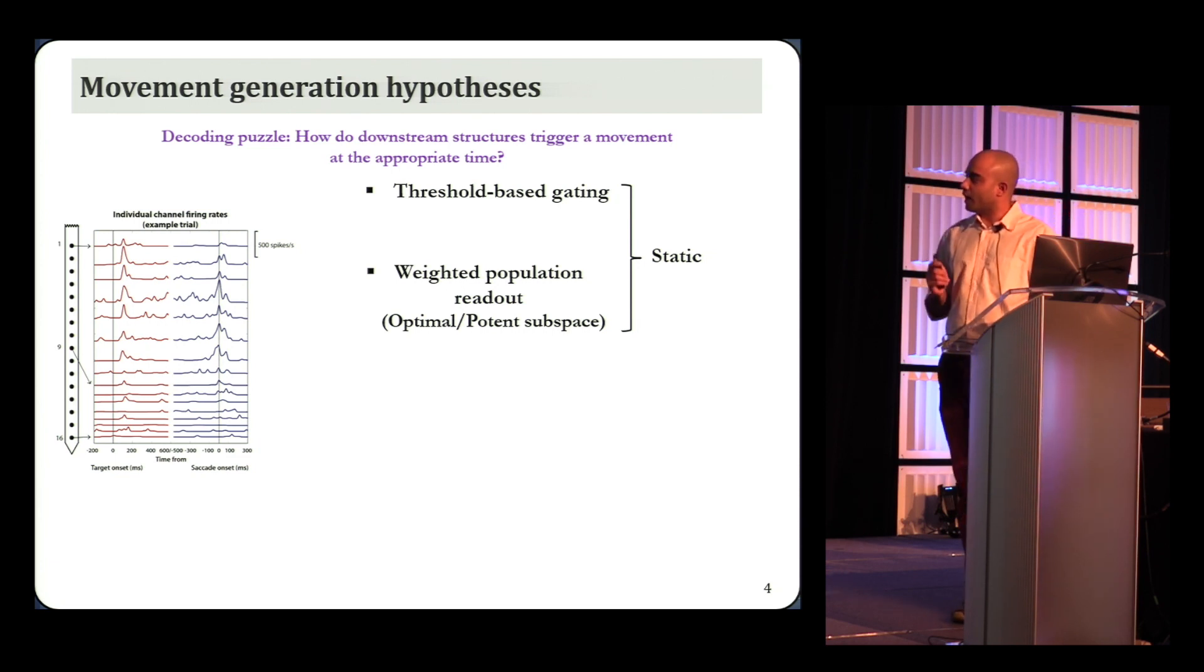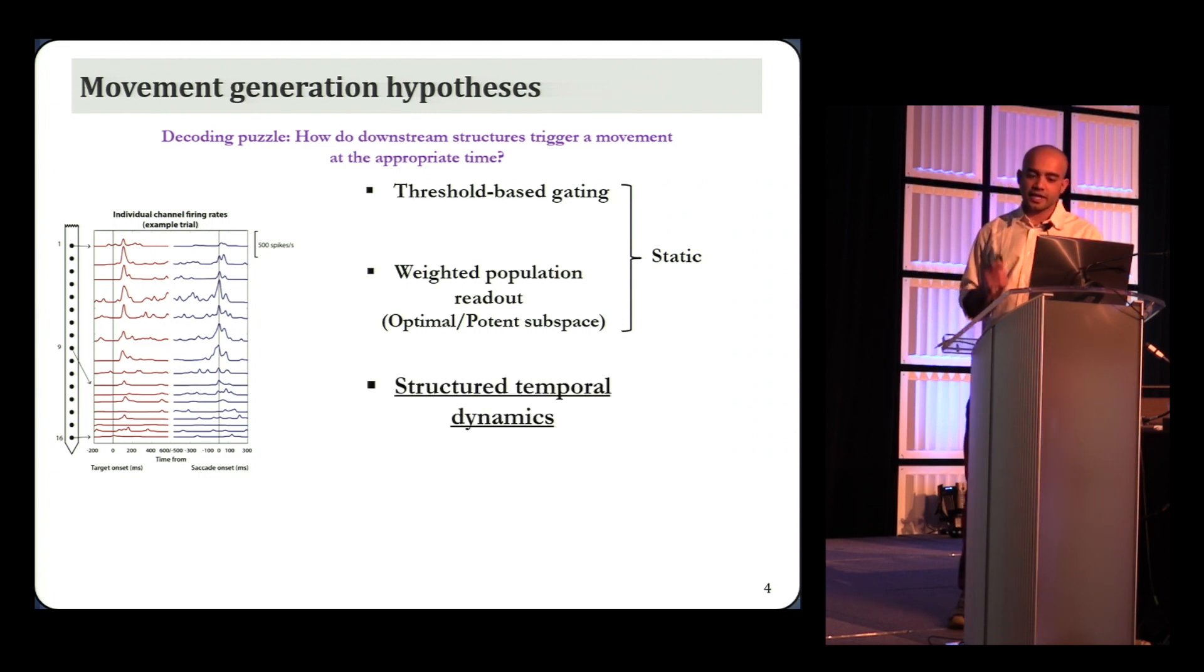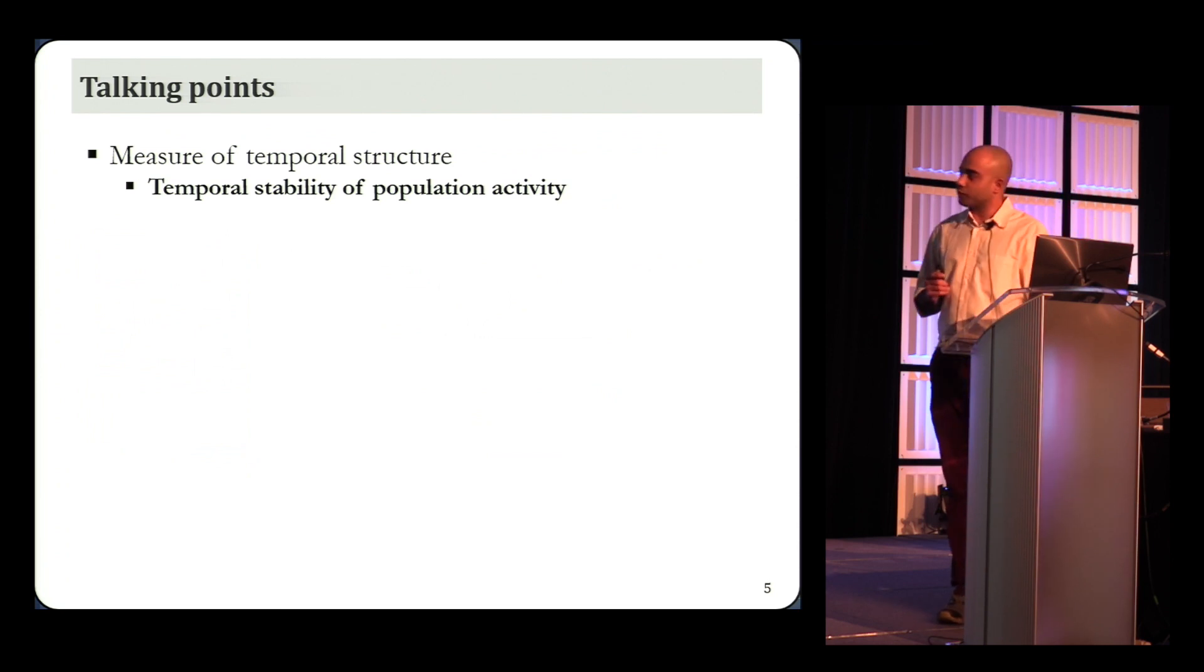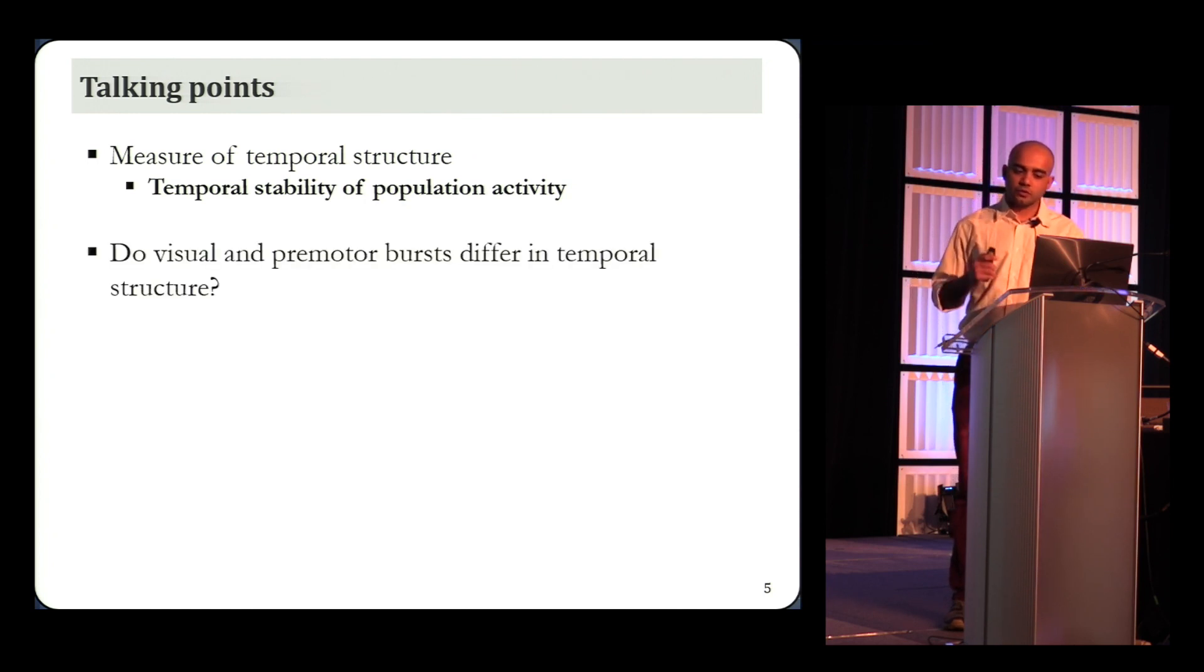We are going to be talking about a slightly different approach today that extends the idea of population states to look at the temporal dynamics of evolving activity. We'll see that in addition to where in state space activity lies, what matters is how it is evolving as a function of time. And see that the visual and motor bursts are different in their temporal properties. So here's a brief outline of the rest of the talk. I'll first talk about how you can estimate temporal dynamics and define a measure called the temporal stability. Then we'll use that to test whether the visual and motor bursts have different temporal dynamics. And finally, I'll show you results from a causal test using pattern microstimulation.